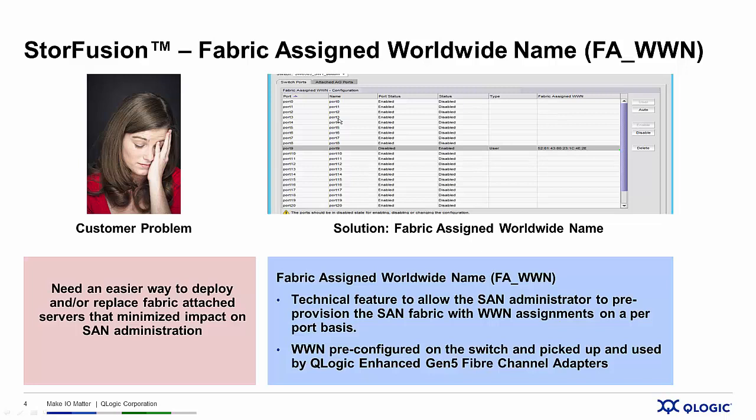With no servers, there's no way to determine the worldwide names of each of the host Fiber Channel connections. That means Sarah and her team can't do the zoning, and they'll be asked to do a rush job at the last minute to get the job done — late nights and long weekends, and nobody likes that.